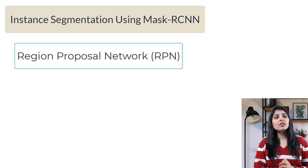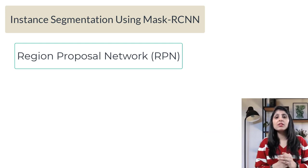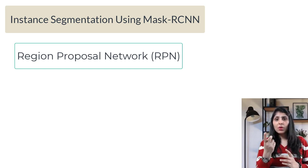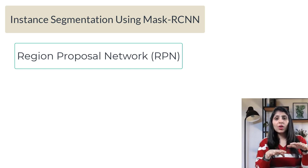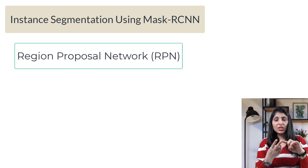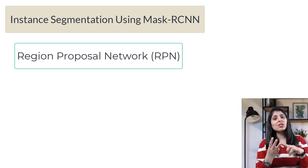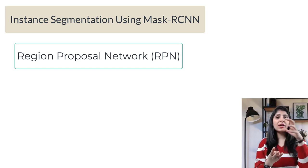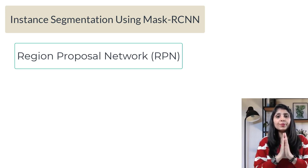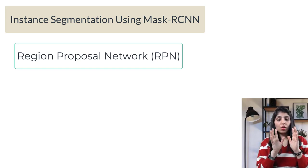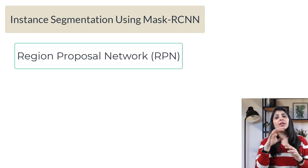Mask RCNN is just an extension of Faster RCNN. Faster RCNN is an object detection model that plots bounding boxes and class labels. In Mask RCNN we do the same object detection, and additionally there is one more step: creating the mask.